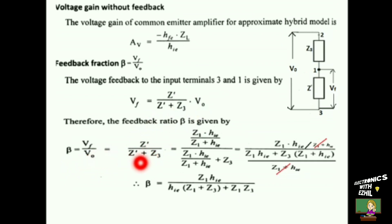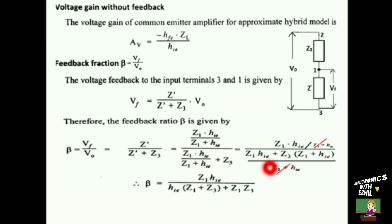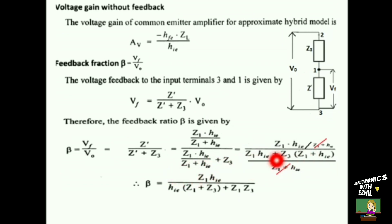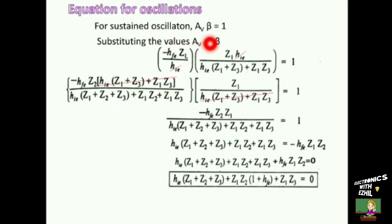Now we replace Z-dash with Z1·hie / (Z1 + hie) in numerator and denominator. Taking LCM for the denominator gives Z1·hie + Z3·(Z1 + hie) divided by Z1 plus hie. The (Z1 + hie) terms cancel. Taking hie commonly out between the first and last terms of the denominator gives hie·(Z1 + Z3) + Z1·Z3. The numerator is Z1·hie. This is the expression for beta.